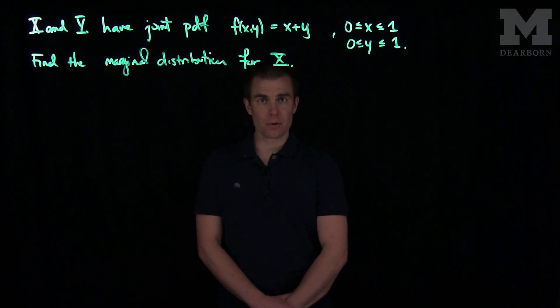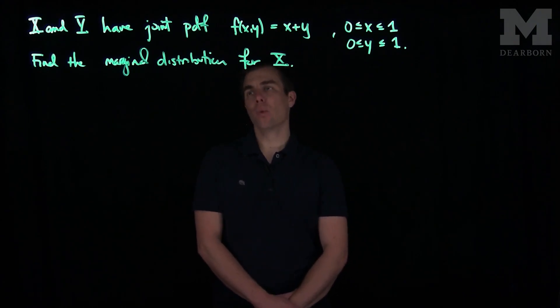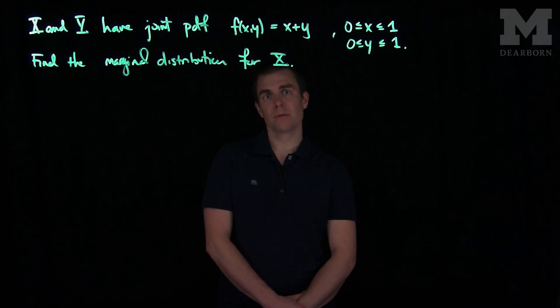In this problem we are given two random variables, x and y, whose joint pdf is x plus y supported on the unit square, x between 0 and 1, y between 0 and 1. We are asked to find the marginal distribution for x.